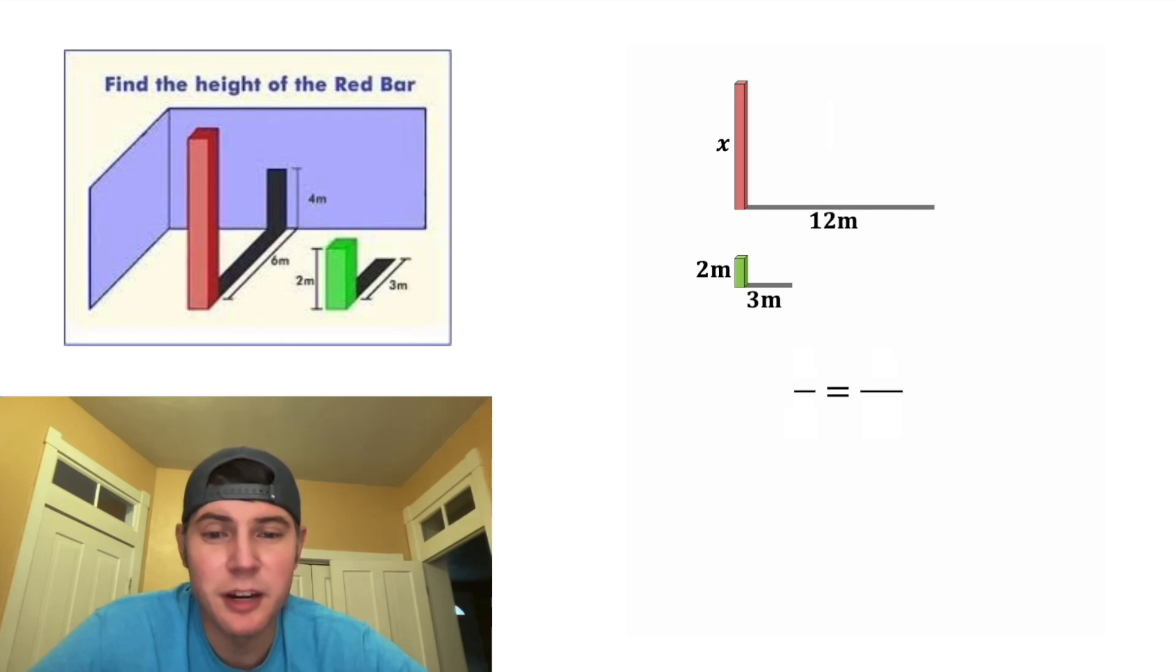So now we no longer need this thing and we can set up another proportion. The two over three will equal X over 12. And now to solve for X, we're going to cross multiply. Three times X is three X, and that's going to be equal to two times 12, which is 24. And then we can divide both sides by three and we get X equals eight.